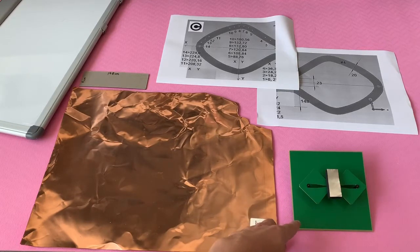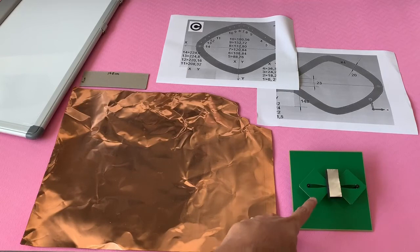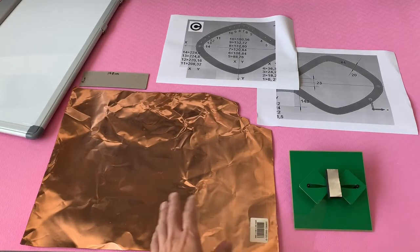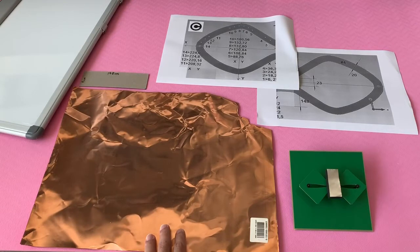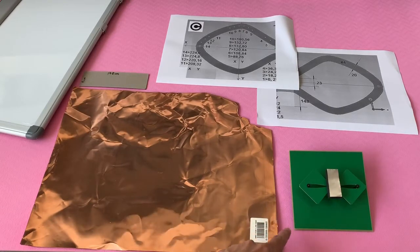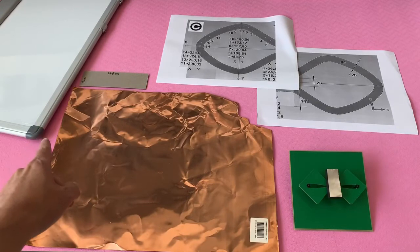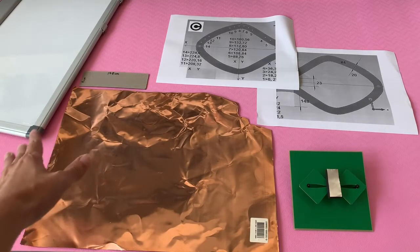For the element of our antenna we will be using copper sheet, and for the reflector we'll be using a whiteboard. It's a magnetic whiteboard and it's big enough to be used as a reflector.